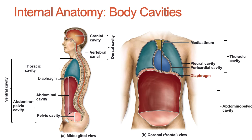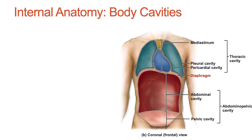The abdominopelvic cavity is the largest cavity in the body. It is further subdivided into the abdominal cavity, which houses the majority of the digestive organs, and the pelvic cavity, which houses the reproductive organs and the urinary bladder. Notably, a membrane does not physically divide the abdominal and pelvic cavities.